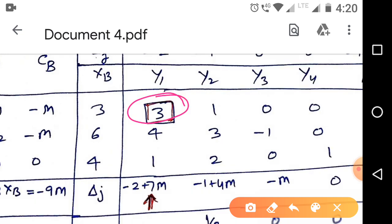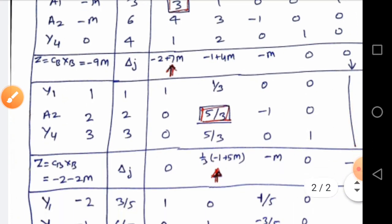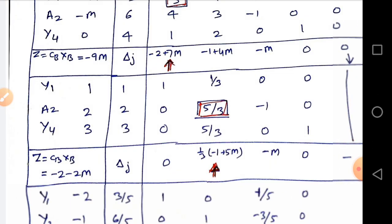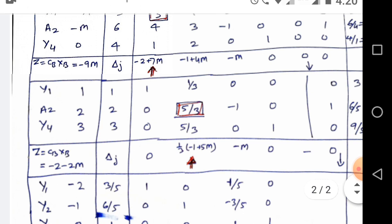Now find the key element. The key element or pivotal element is 3. This is A11, so we make A11 is 1 and rest of the elements is 0 using row operation. We can see easily the artificial variable A1 removed from the basic.